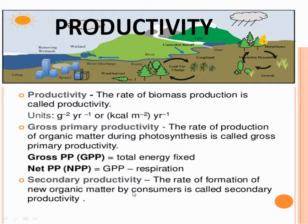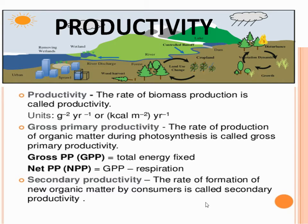Secondary productivity — in gross primary productivity, we are talking only about the producers, that is green plants which can photosynthesize, or the autotrophs. The energy fixed by autotrophs is known as gross primary productivity. Secondary productivity is the rate of formation of new organic matter by the consumers, who are consuming the autotrophs.